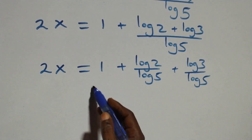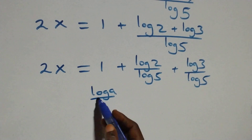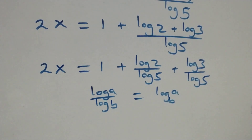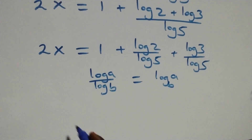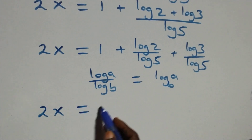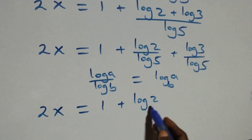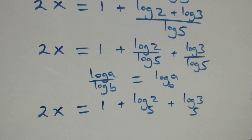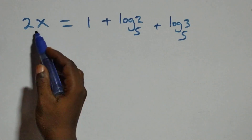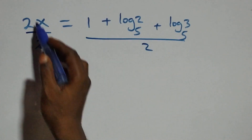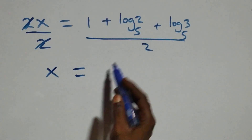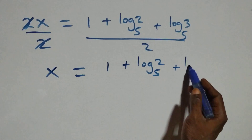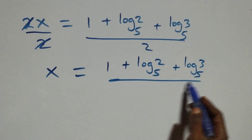We apply the change of base formula: log a over log b is the same as log a to base b. So what we have becomes 2x equals to 1 plus log 2 base 5 plus log 3 base 5. Dividing both sides by 2, we get x equals to (1 plus log 2 base 5 plus log 3 base 5) all over 2.